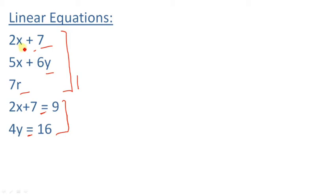A linear equation in one variable means there is only one variable. For example, 5x plus 6y has two variables, x and y. But 2x plus 7 equals 9 has only one variable, x. In this chapter and the upcoming videos, we will learn different ways to find the solution of linear equations.